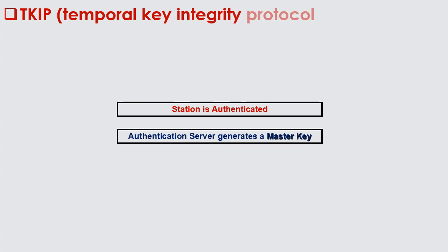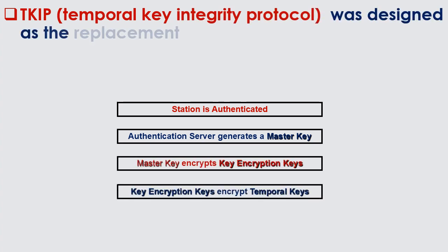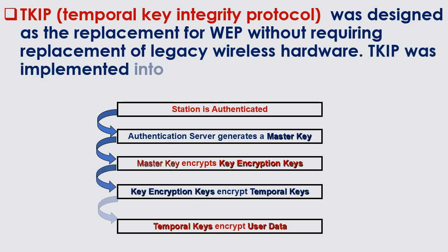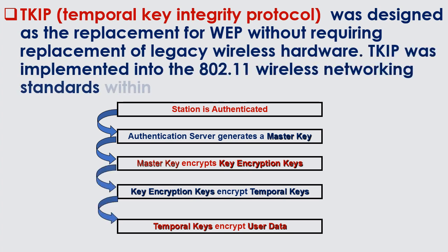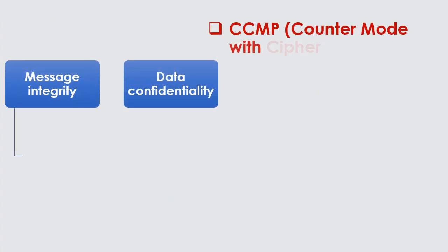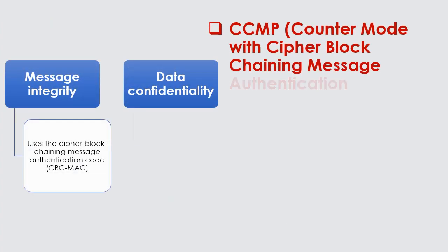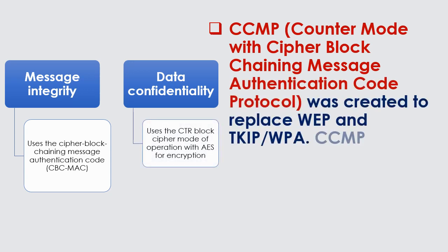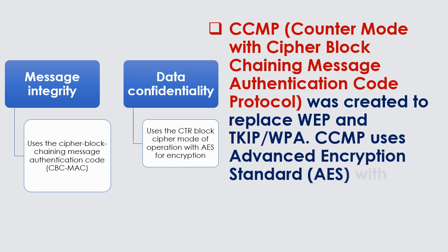TKIP, Temporal Key Integrity Protocol, was designed as the replacement for WEP without requiring replacement of legacy wireless hardware. TKIP was implemented into the 802.11 wireless networking standards within the guidelines of WPA. CCMP, Counter Mode with Cipher Block Chaining Message Authentication Code Protocol, was created to replace WEP and TKIP with a 128-bit key.